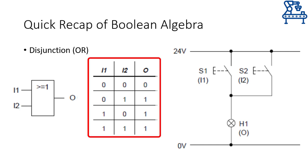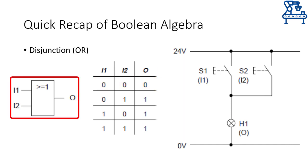The truth table shown over here for the disjunction function shows the same thing — if both inputs are OFF, only then the output will be low or 0, otherwise it will be high. The ISO symbol for this function is shown over here with two inputs and a single output.